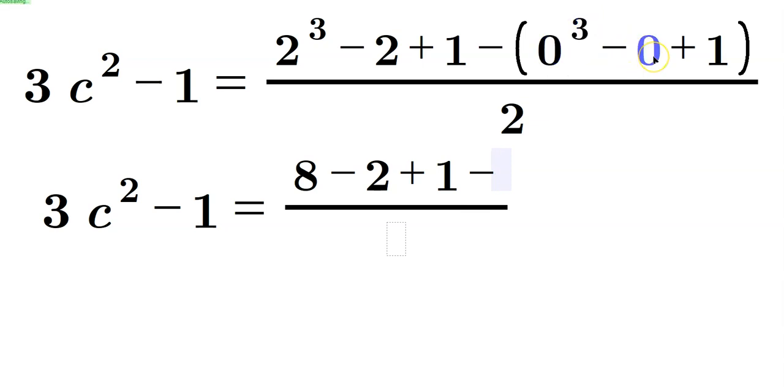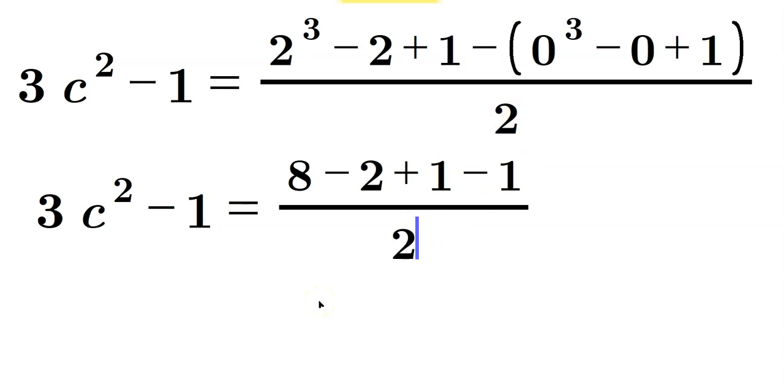well, 0 cubed is 0, minus 0 is 0, and then plus 1. So there's only a 1 left over. But be careful because it's a positive 1 within the parentheses. And then this, where I'm pointing, makes it into a negative 1. And then you still have the 2 in the denominator.